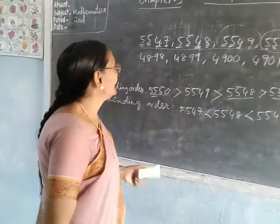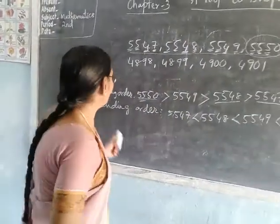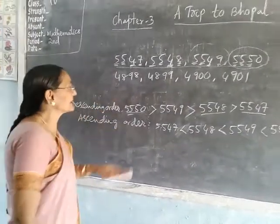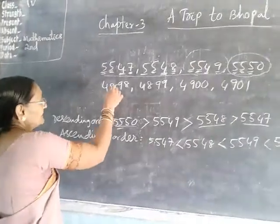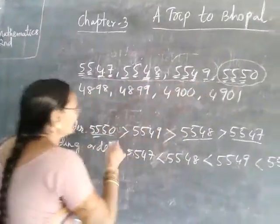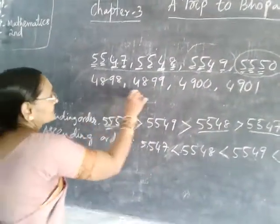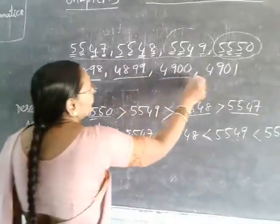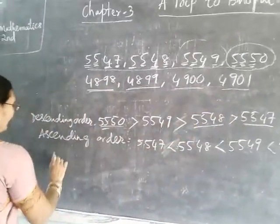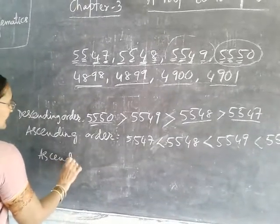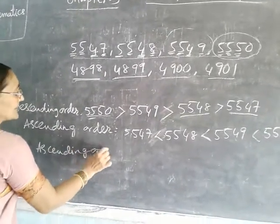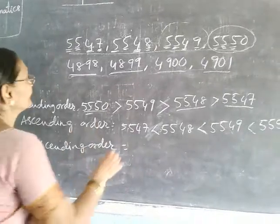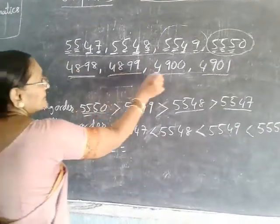I continue my class. Now, ascending and descending order — we are going to start in that group. Once again, we have studied this. Here, numbers we have already discussed. What you write down? Ascending order. What is the meaning of ascending order? Smaller to greatest. So, which one is smaller and which one is greater?